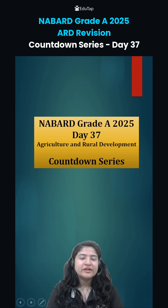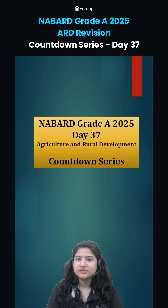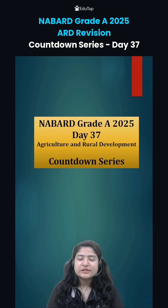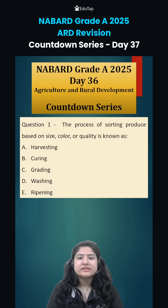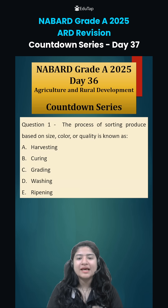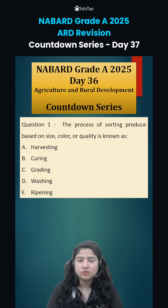Hi everybody. Welcome to day 37 of the ARD Countdown series. First, let's look at yesterday's answers. Question number one was: the process of sorting produce based on size, color, or quality is known as what?